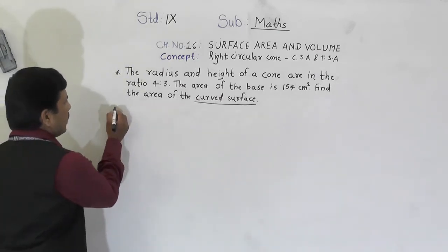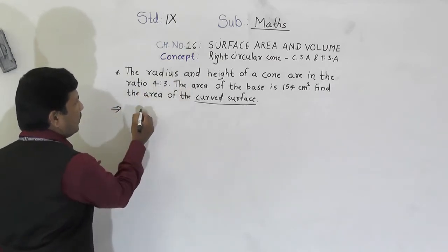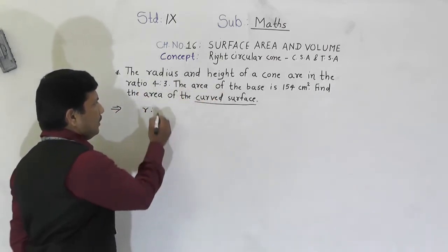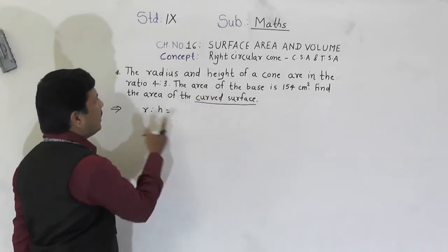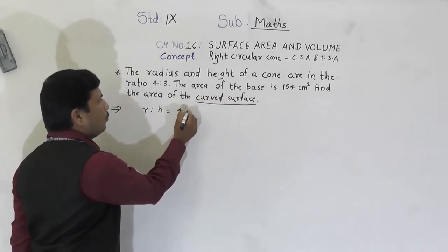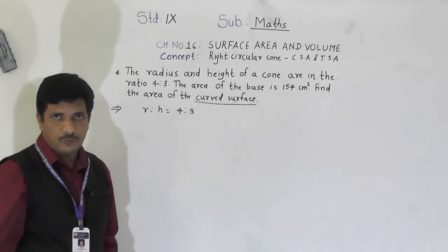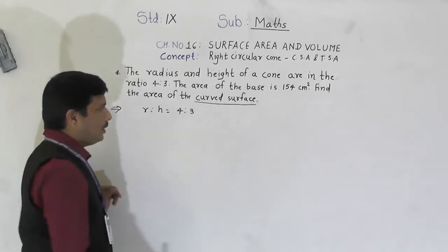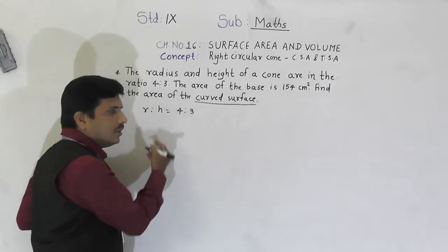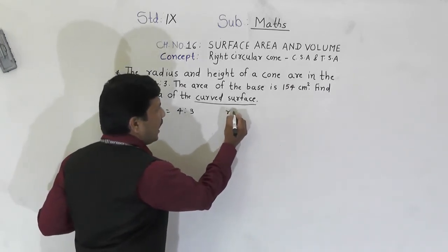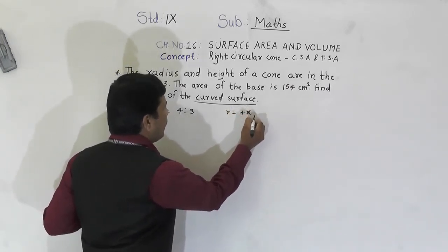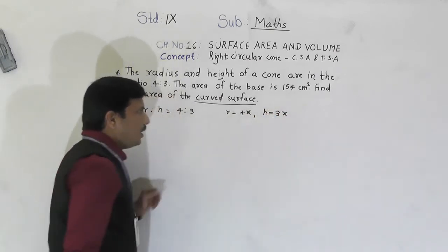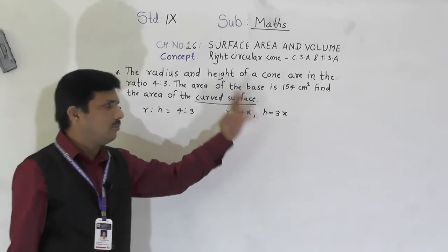What is given here: the ratio is given. So radius r to height h is equal to 4:3. Whenever ratios are given, we have to use a variable with them. So radius r equals 4x and height equals 3x — radius will be 4x and height will be 3x.